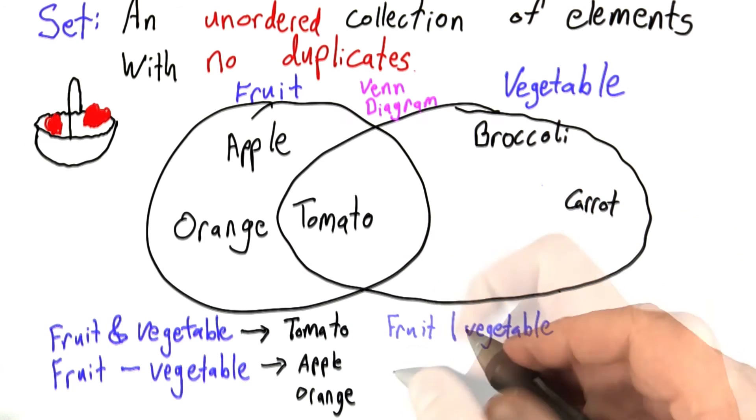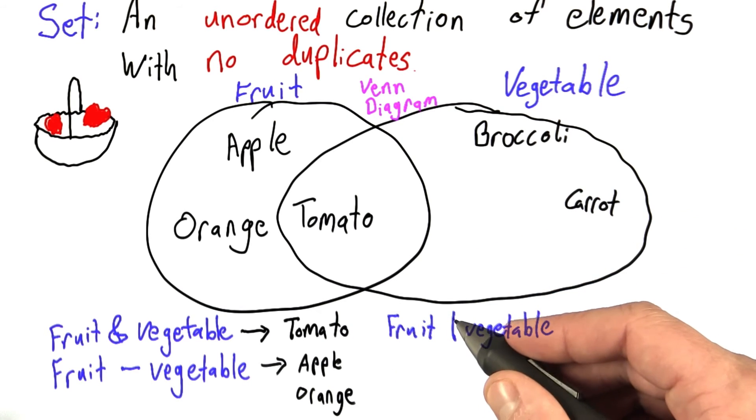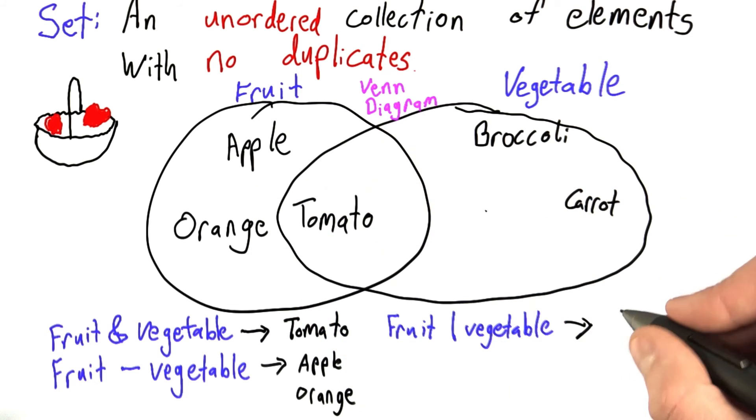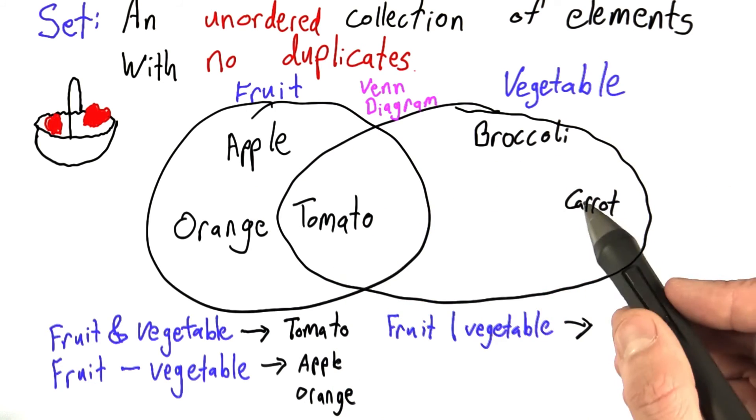We could ask which elements are fruits or vegetables. And here I've used the vertical line to indicate that. And this would give us all of these entries. All of these entries are either a fruit or a vegetable or both.